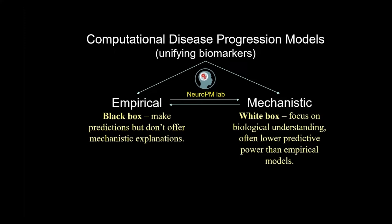That's precisely what computational disease progression models focus on. There are two main families: empirical models, such as deep learning models that focus on making predictions with the available data and can integrate as much data as available, but are difficult to interpret. On the other hand, we have mechanistic models that focus on biological understanding, helping to validate hypotheses and test mechanisms associated with each disease, but they may have lower predictive power. We try to combine both to leverage the advantages of each.